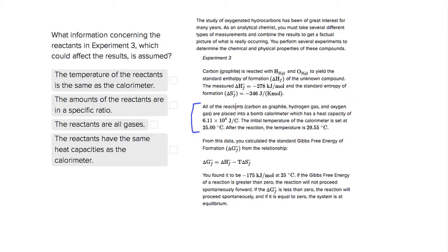So let's look at our choices. Choice 1, the temperature of the reactants is the same as the calorimeter. It tells us that they're placed into this bomb calorimeter, which has a heat capacity of this number, and the initial temperature of the calorimeter is set at 25 degrees Celsius.